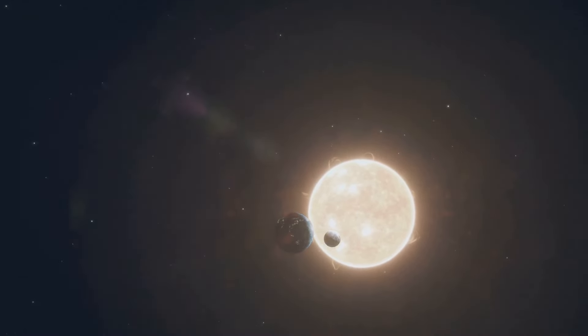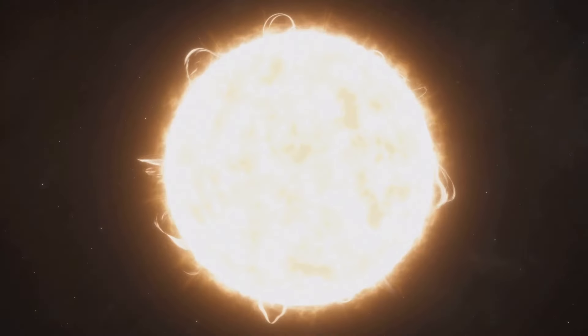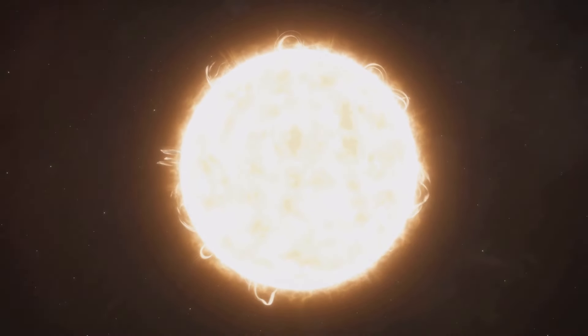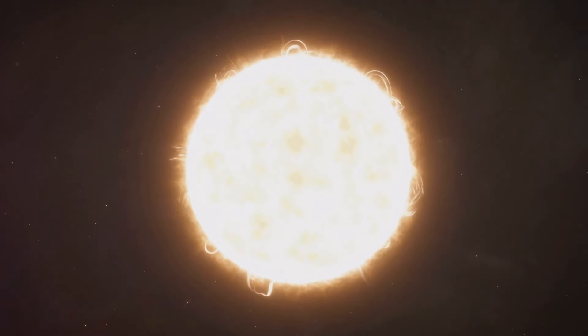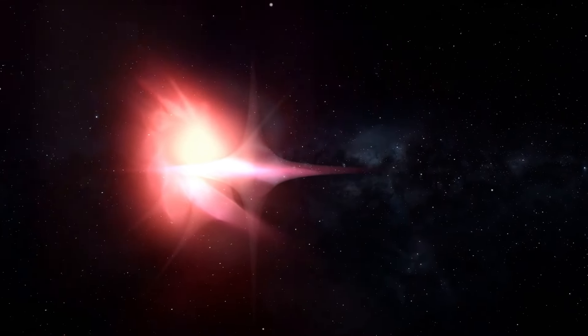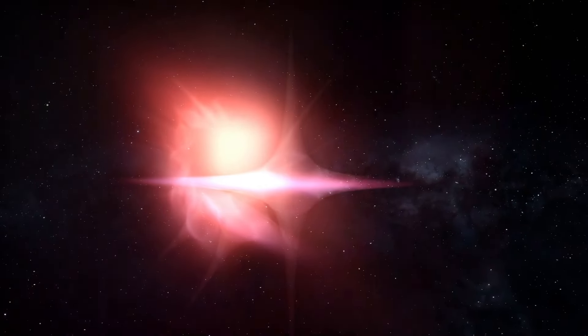The sun, a yellow dwarf star, reigns supreme at the center of our solar system. Composed primarily of hydrogen and helium, the sun generates an incredible amount of energy through nuclear fusion in its core. This process, where hydrogen atoms fuse to form helium, releases a tremendous amount of energy in the form of light and heat, powering our solar system.